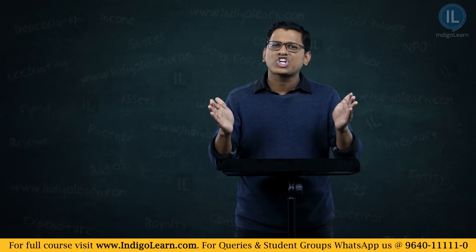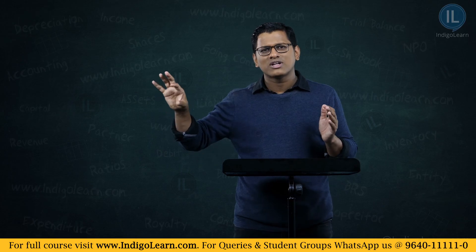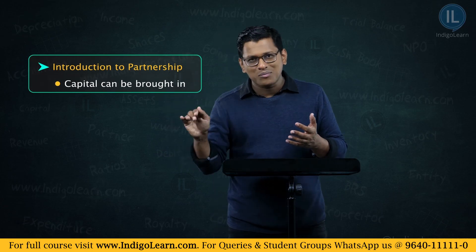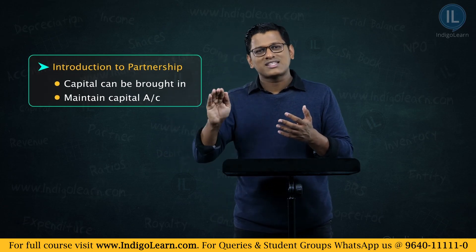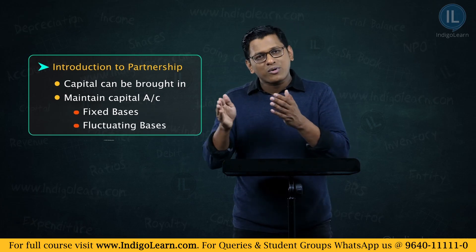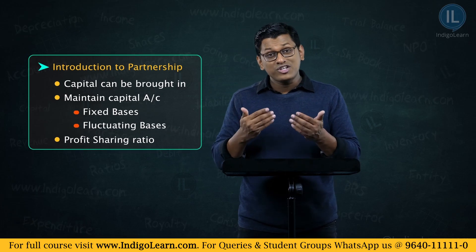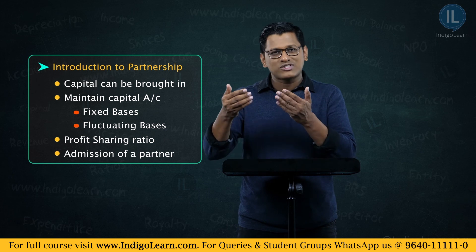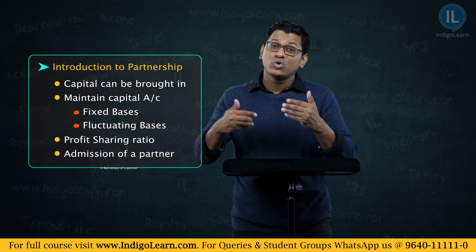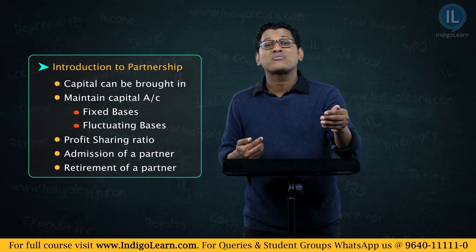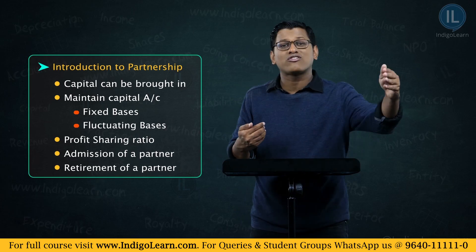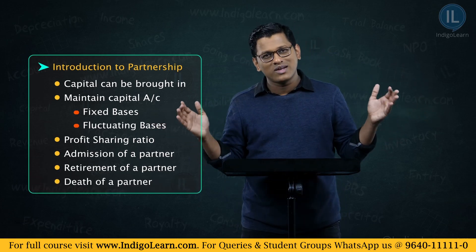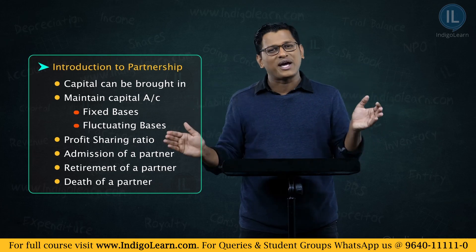In our CA Foundation curriculum, what we will learn is basically this introduction to partnership — how capital can be brought in, how you maintain capital accounts. There is something called fixed basis and fluctuating basis. How profit sharing ratios can be agreed upon and how they can change later. How can you have a new partner joining the business, what kind of scenarios you have to think about. Can a partner retire from the partnership, can that partner move out? And what should we do in the event of the death of a partner? These are the kinds of things we will learn as part of our CA Foundation curriculum. Let's get started.